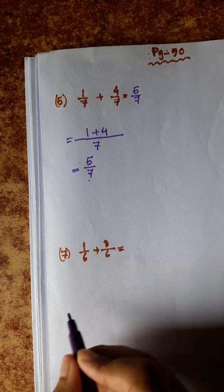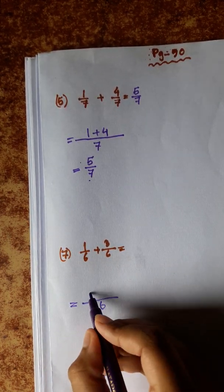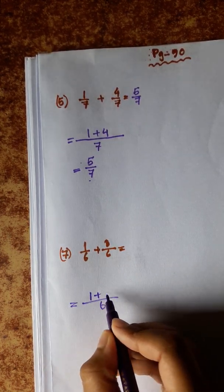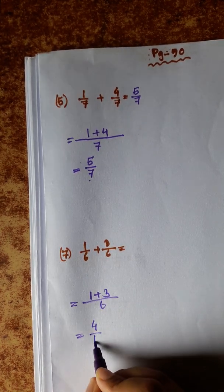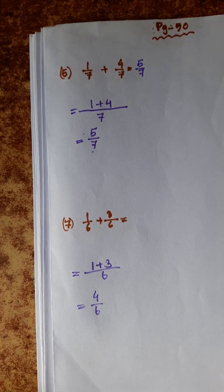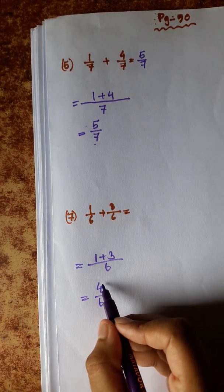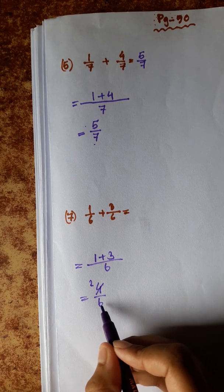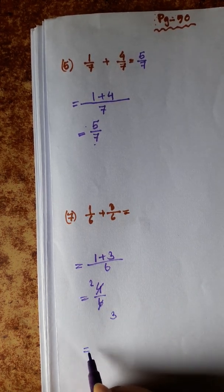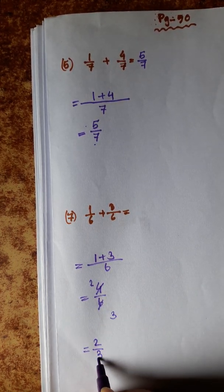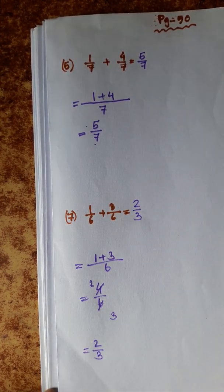Next: denominator same, 6. 1 plus 3 equals 4 by 6. 4 by 6 can be simplified by dividing by 2: 4 divided by 2 equals 2, and 6 divided by 2 equals 3. So the answer is 2 by 3.